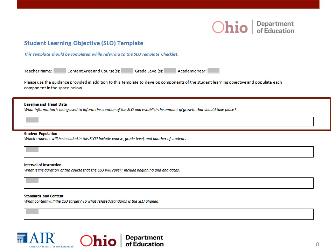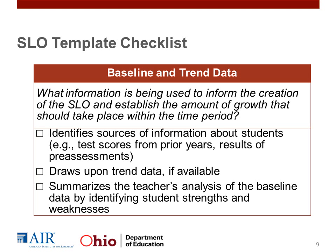Pause here and summarize your analysis in this section of the template. You will be using the SLO template checklist to make sure you have met the minimum criteria for each component of the SLO. Please review the Baseline and Trend Data component of your SLO to make sure that you can check off all of the applicable boxes. If you cannot, please revise this section before returning to the module. Please pause now to conduct your review, then resume when you are ready to move on to the next component.